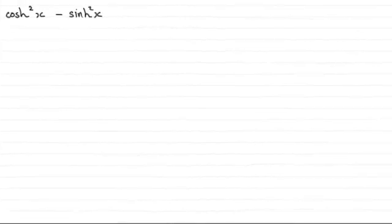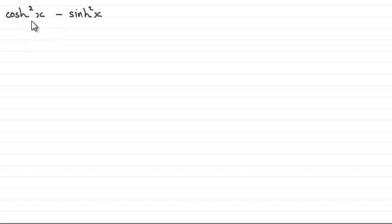Hi there. In this video I want to introduce you to three hyperbolic identities. These are common identities and you should see that there is some similarity to the equivalent trigonometric identities. I'm going to start off by looking at what cosh squared x minus sinh squared x is identical to.